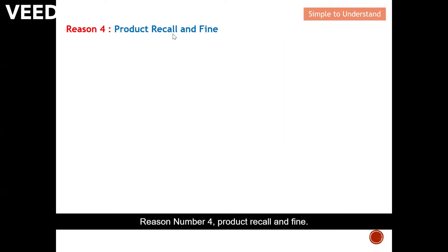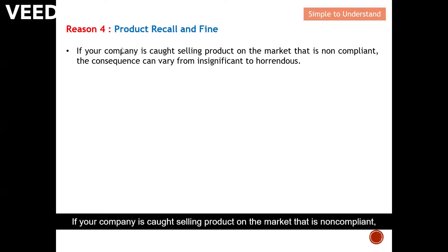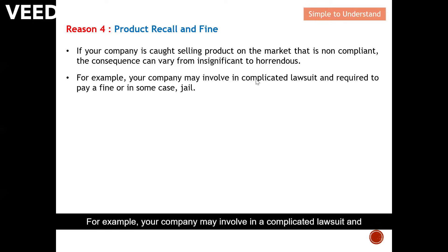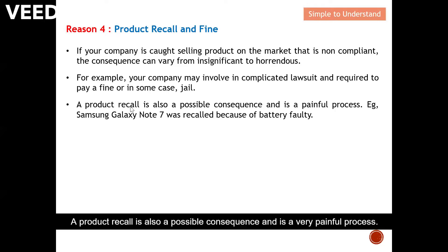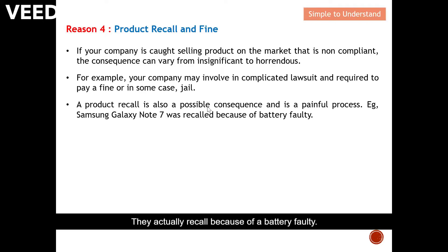Reason number four is product recall and fines. If your company is caught selling a non-compliant product on the market, the consequences can range from insignificant to very serious — including a complicated lawsuit, heavy fines, or in extreme cases, even jail. A product recall is also a possible and very painful consequence. You may still recall the Samsung Galaxy Note 7 recall, which happened because of a battery fault. With that, I'd like to conclude today's discussion — please like and subscribe, thank you.